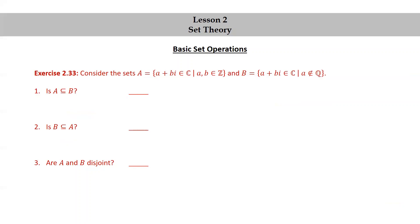Let's try another exercise. Consider the sets A = {a + bi ∈ ℂ : a and b are in ℤ} and B = {a + bi ∈ ℂ : a is not a rational number}. Is A a subset of B? Is B a subset of A? Are A and B disjoint? Now's a good time to pause the video, try this exercise yourself, and then resume the video to check your answers against mine.